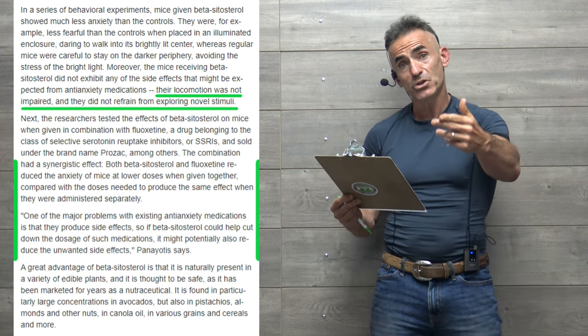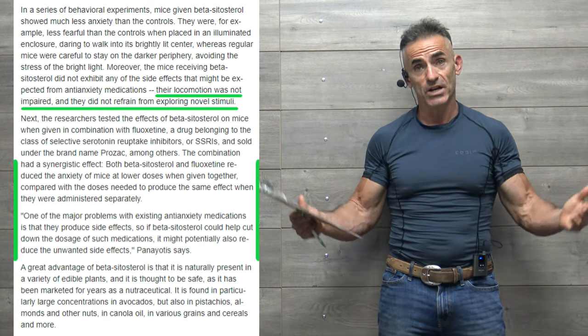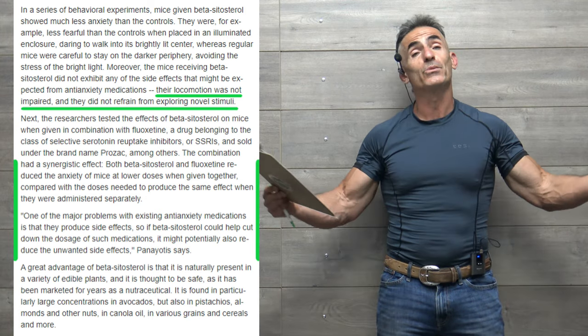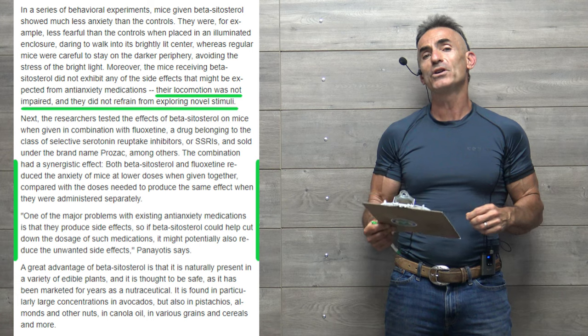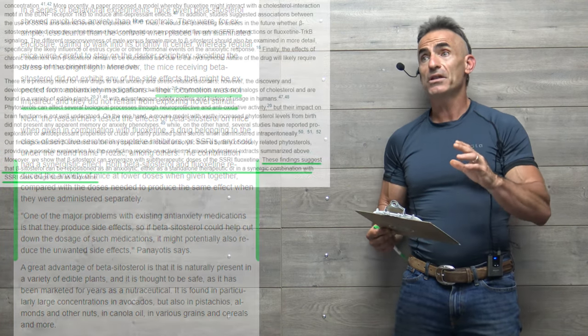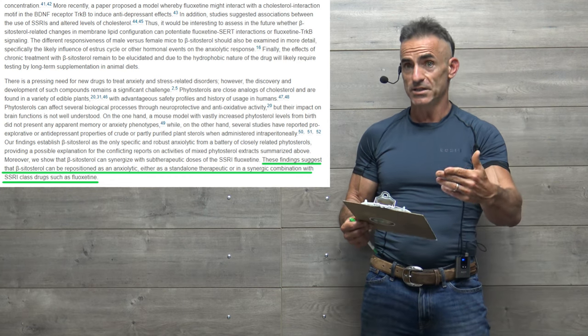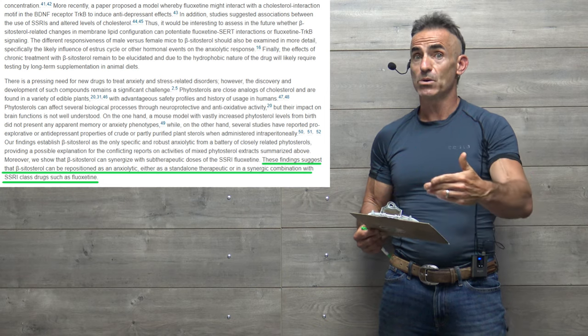Quote: "One of the major problems with existing anti-anxiety medications is that they produce side effects. So if beta-sitosterol can help cut down the dosage of such medications, it might potentially also reduce the unwanted side effects," says the wonderful researcher. Now we're going to go to the full study for the conclusion, and after we read the conclusion, we'll look at the details referencing the dosaging utilized in both the fluoxetine and beta-sitosterol on its own.